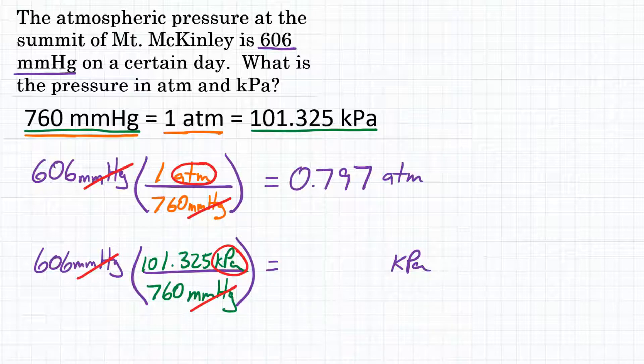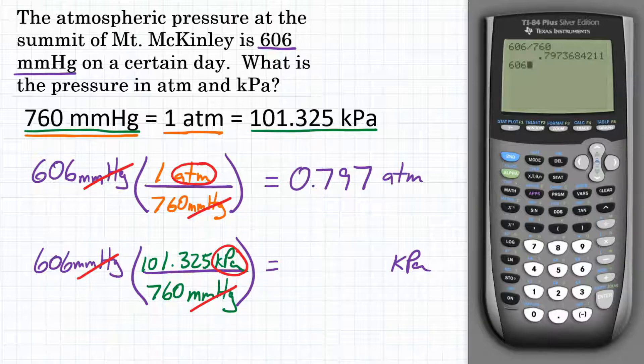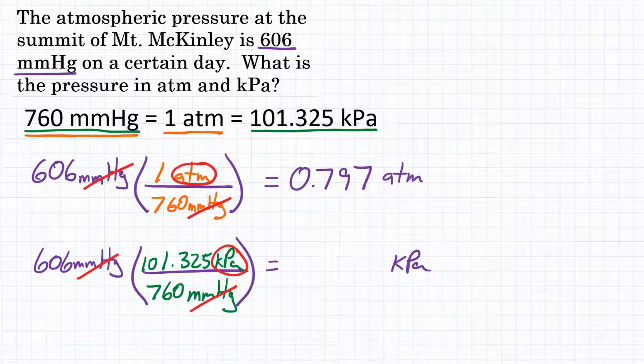So now we can do the math here. So we are going to again start with 606 and multiply by the top of the fraction and divide by the bottom. So we are going to multiply by 101.325, and then divide by 760, hit equals. And this is what our calculator gives us. Let's round that to again three significant figures to get 80.8. So final answer here is 80.8 kPa.